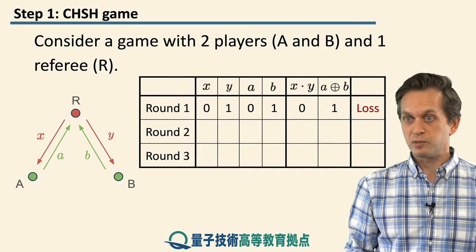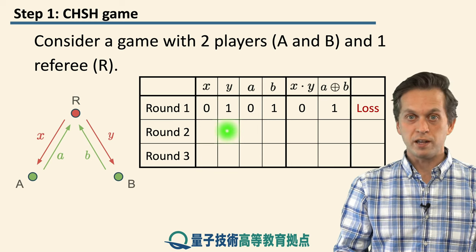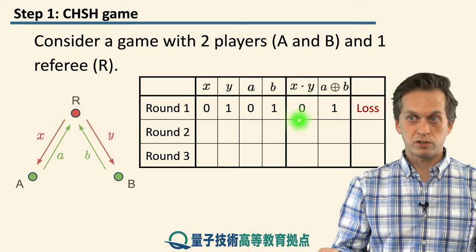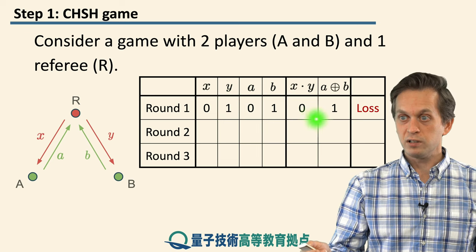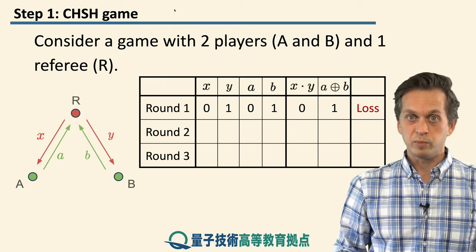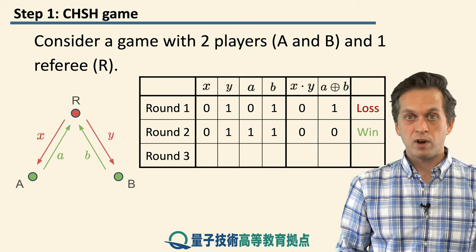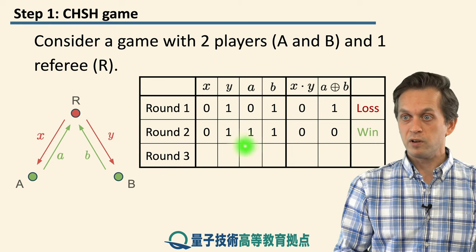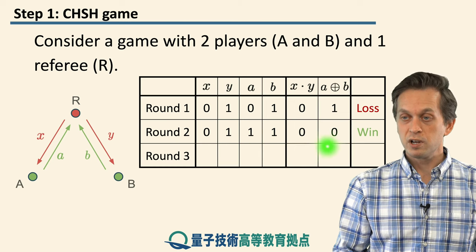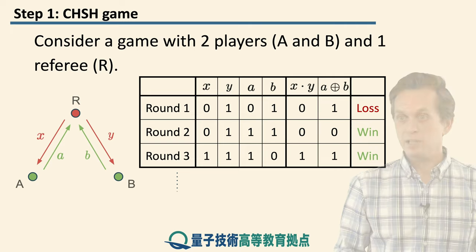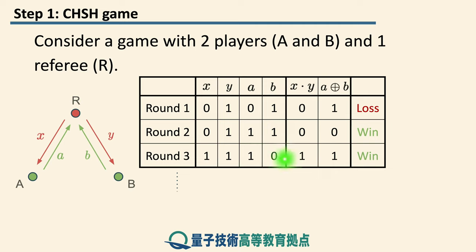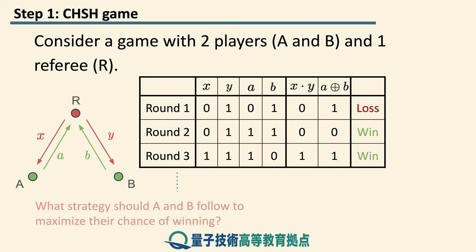Let's see how this works in practice. For example, if X=0 and Y=1, the product is zero. If A replies with 0 and B replies with 1, the binary sum is one — zero and one are not equal, so they lose that round. In the next round, with X=0 and Y=1 again, if A and B both reply with 1, the binary sum of 1 and 1 is zero, satisfying the winning condition — they win. In round three, if X=1 and Y=1, and A replies with 1 and B with 0, they win again because X·Y equals the binary sum of A and B.